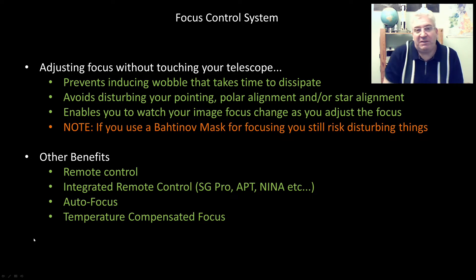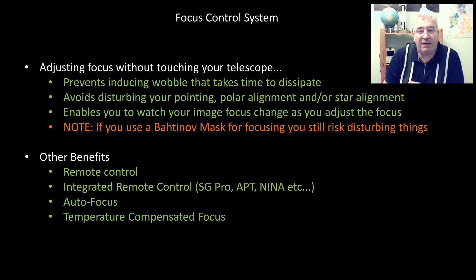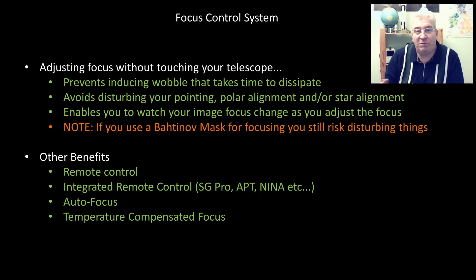Another attraction is temperature-compensated focus. If your telescope has a significant amount of metal in it, particularly if the tube is made of metal, that metal will expand and contract with temperature — getting longer as it warms and shorter as it cools — which moves the focus position. The idea of temperature-compensated focus is to have something measuring the temperature and automatically moving the focus as temperature falls, to keep yourself at the optimum position.